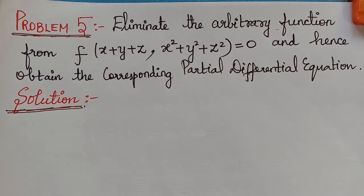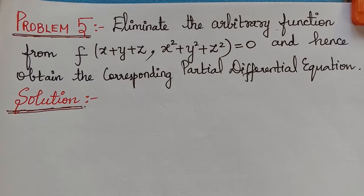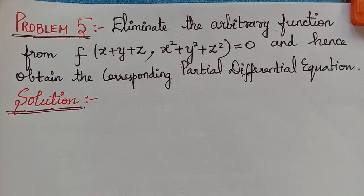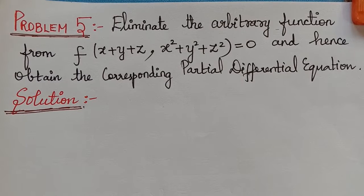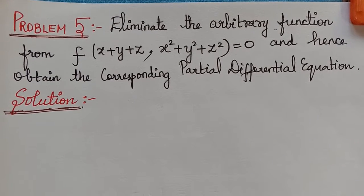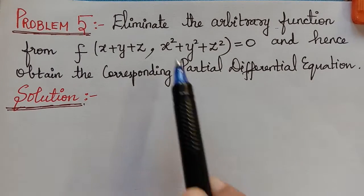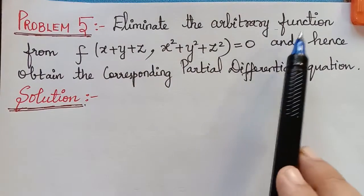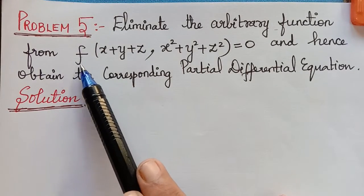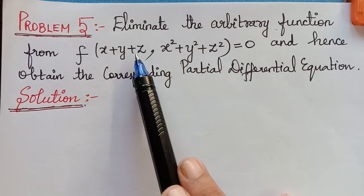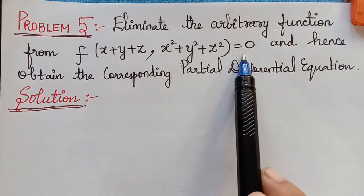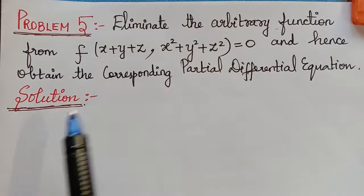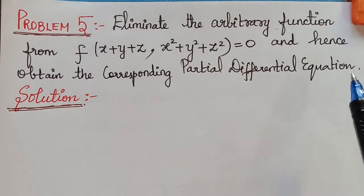Dear students, here we have the continuation video lecture on the topic partial differential equations. We have to form the partial differential equation by eliminating the arbitrary function. This is problem 5. The question is: eliminate the arbitrary function from f(x+y+z, x²+y²+z²) = 0 and hence obtain the corresponding partial differential equation.